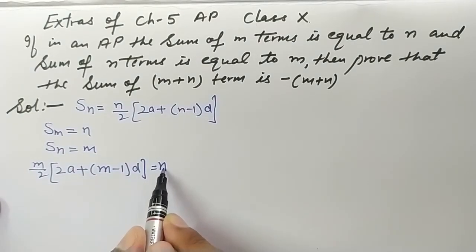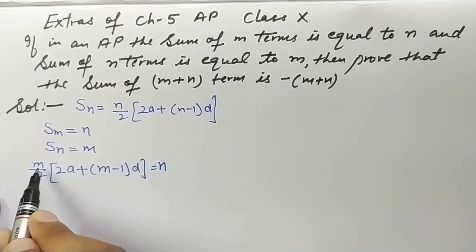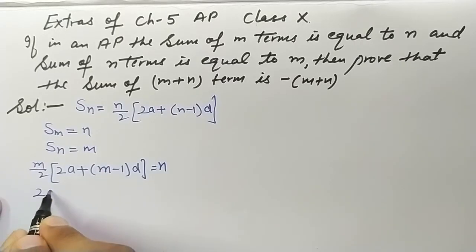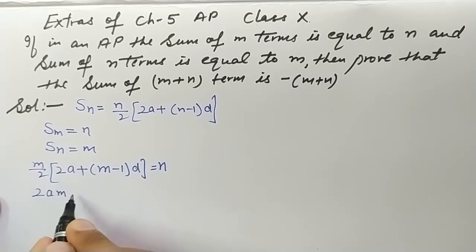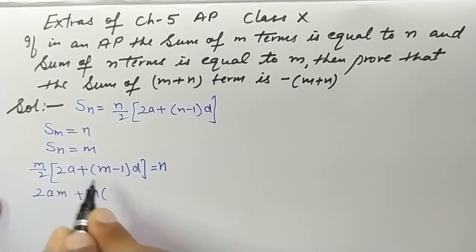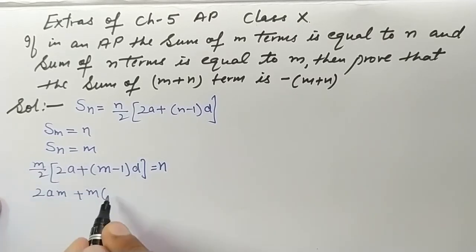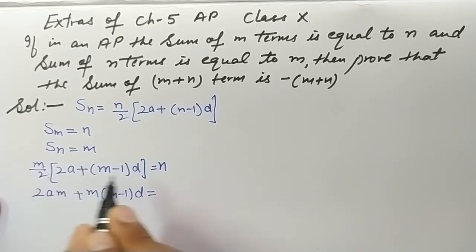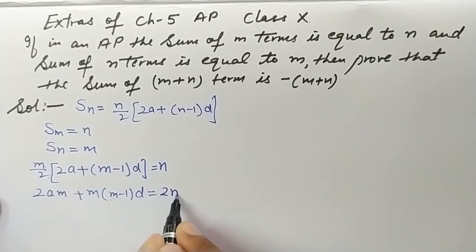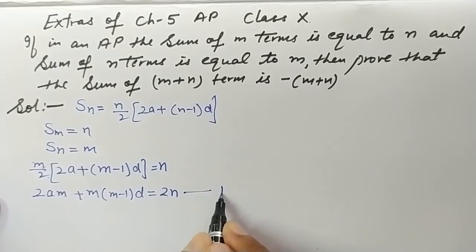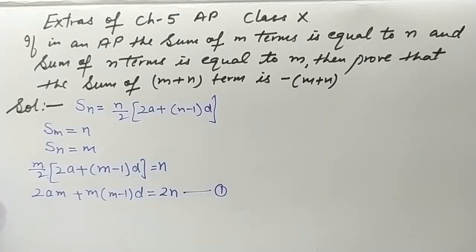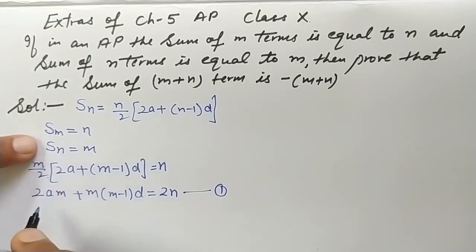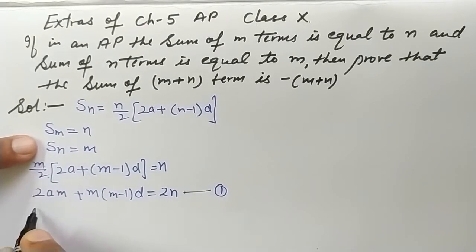Multiplying both sides by 2, the right-hand side becomes 2n, and distributing m inside gives: 2am + m(m−1)d = 2n. This is equation number 1. Now for S_n: S_n = n/2 into (2a + (n−1)d) = m.